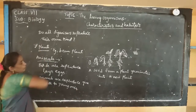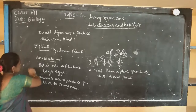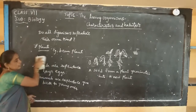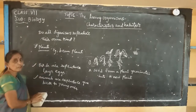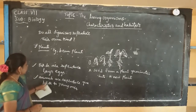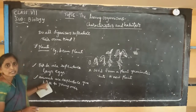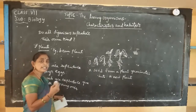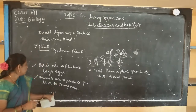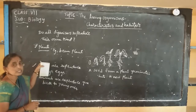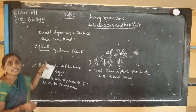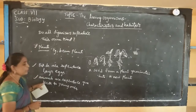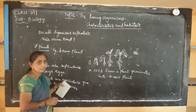The mode of reproduction is different even among plants and animals. Animals like birds and mammals have different reproduction modes. There is sexual reproduction and asexual reproduction. Plants also have sexual reproduction and asexual reproduction. Even among plants and animals, the mode of reproduction is different.